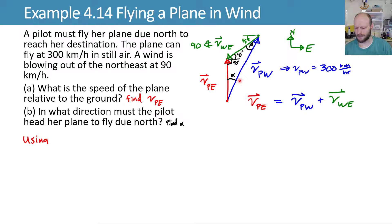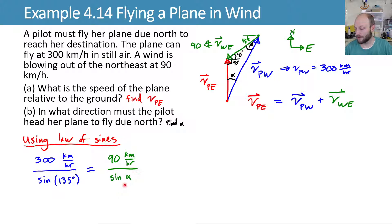Law of sines says that the ratio of the length of a triangle to the sine of its opposite side is a consistent ratio around the triangle. So if we use this 300 kilometers per hour side, and I know this is not a length, this is a velocity, but it works the same. 300 kilometers per hour over the sine of its opposite angle, 135 degrees, is going to equal this green side divided by the sine of its opposite angle, alpha, 90 kilometers per hour over sine of alpha. And that's also equal to this unknown side, VPE, over the sine of its unknown opposite angle, beta.